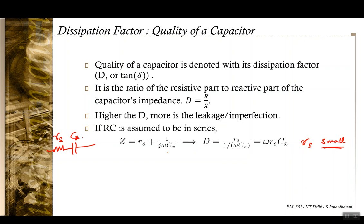The impedance is Z = Rs + 1/(jωCx), so the dissipation factor is D = ω·Rs·Cx. The leakage is the I²·Rs loss when current flows through this series resistance in the series configuration of a capacitor.